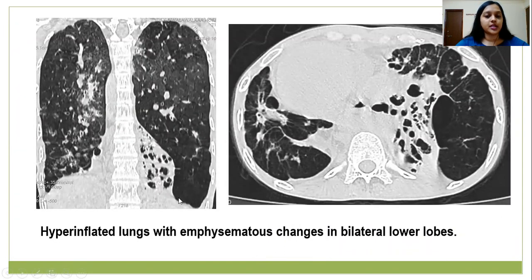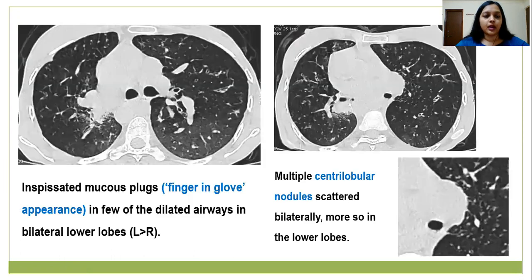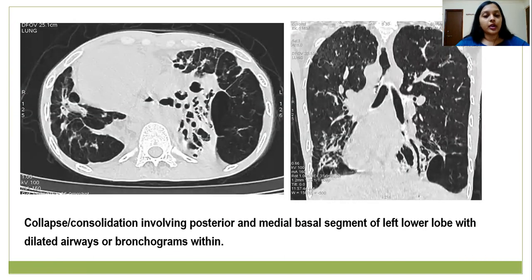On high-resolution CT of thorax, we see hyperinflated lung fields with emphysematous changes in both lower lobes. Significant cystic and tubular bronchiectatic changes are seen in the left lower lobe, and tubular bronchiectatic changes are seen in the right lower lobe. Inspissated mucus plugs are seen in few of the dilated airways, giving a classic finger-in-glove appearance. Multiple centrilobular nodules are seen scattered bilaterally. Collapsed consolidation involving the posterior and medial basal segments of the left lower lobe are seen with few dilated air bronchograms within.